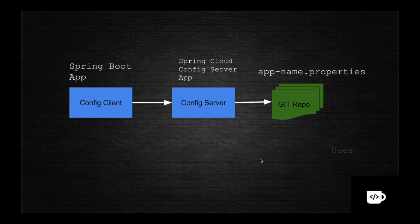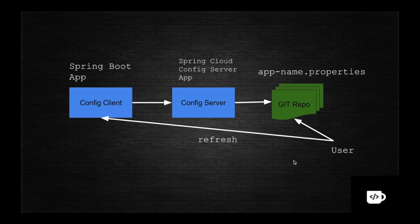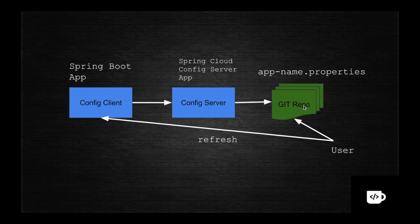To refresh the latest changes from the properties, the user commits changes into the app's properties file, then triggers a refresh option on the client. When triggered, the client goes to the server and asks for new information from the Git repository, re-pulling the configuration and refreshing the properties — all without redeploying or restarting the application.